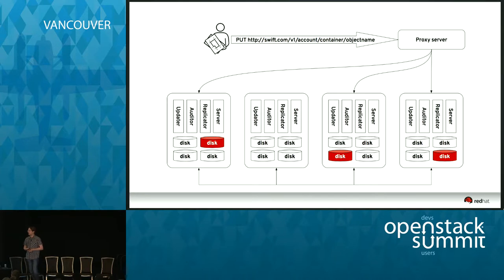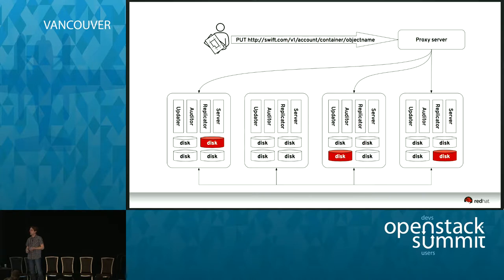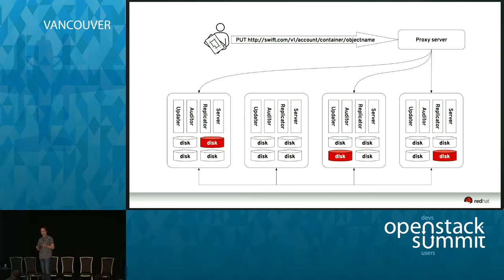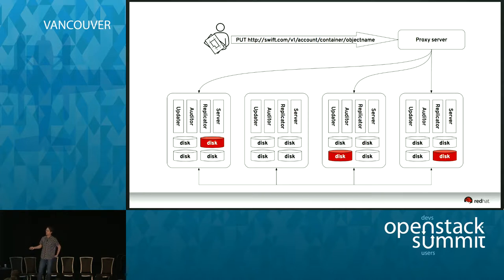At the backend servers there are a lot of processes running. There are servers for account databases, container databases, and object servers as well. At the same time you have multiple replicators for all these different kinds of data, plus auditors and updaters. The replicators ensure that you have multiple copies across your cluster. For example, if a disk fails, the replicator will take care of it later and create a new copy on a replacement disk. If you're running Kilo or later, there's a new feature called Erasure Coding — in that case you have a reconstructor that rebuilds missing fragments from your object.